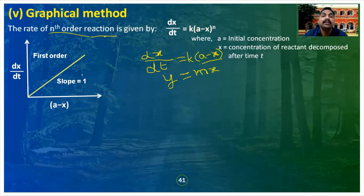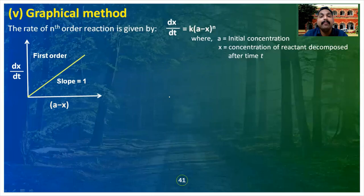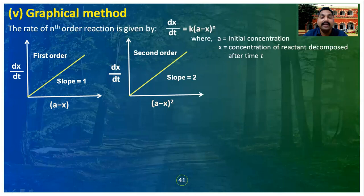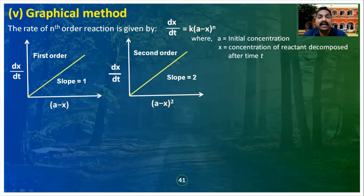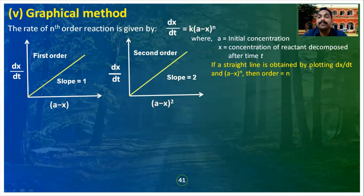If we do not get a straight line, go for second order. For second order, we plot (a−x)² against dx/dt. If we get a straight line, then order = 2. Thus, in general, to determine n, we plot (a−x)^n versus dx/dt by changing the values of n. If a straight line is obtained by plotting dx/dt against (a−x)^n, then the order equals n.